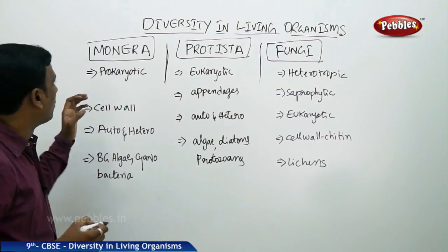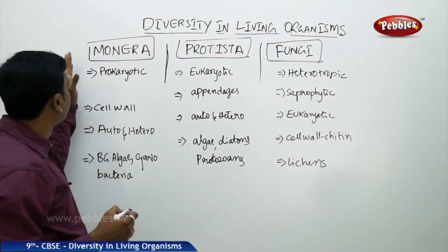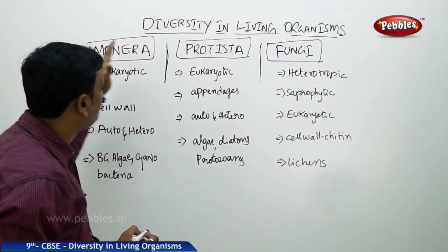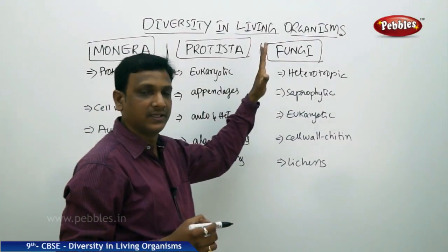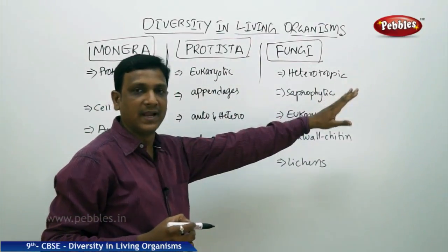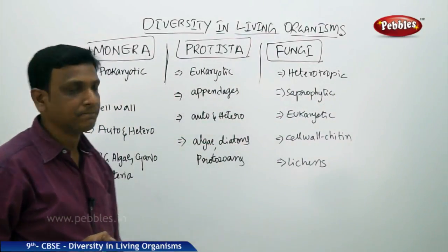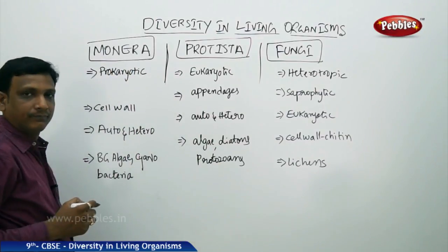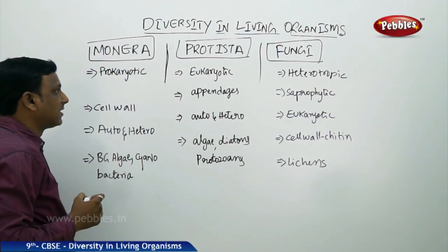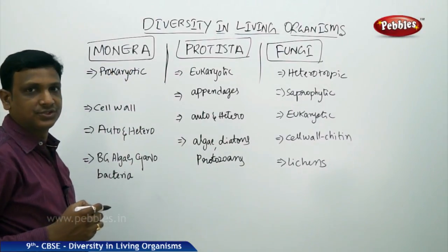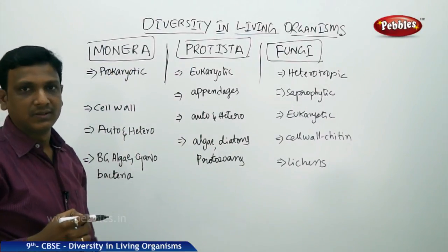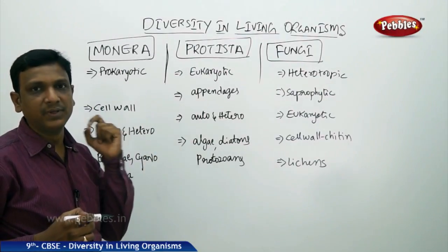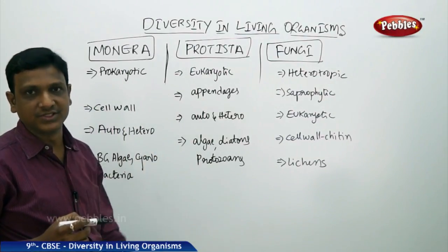Among these five kingdoms, we will first discuss three kingdoms: Monera, Protista, and Fungi. Later we will discuss Plantae and Animalia. So let us look at Monera. Monerans are the most primary organisms that have a very simple body structure.